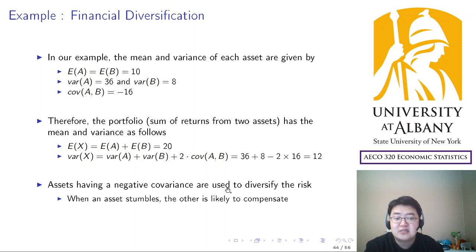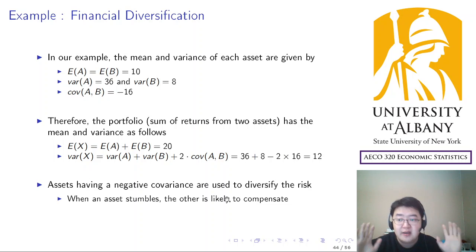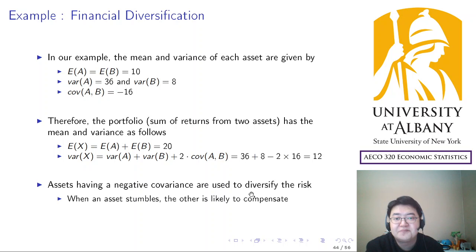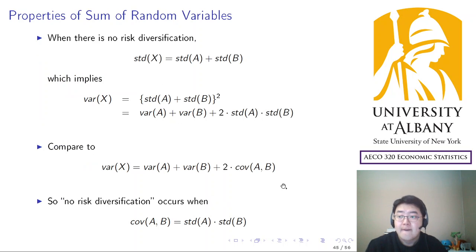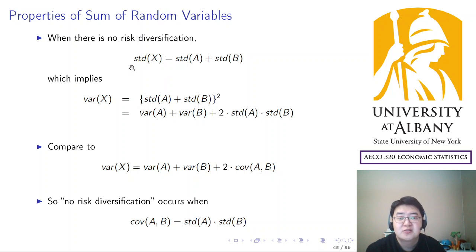Risk is diversified by the negative covariance, which means when one asset is not doing well, the other complements it — they move in opposite ways. Diversification does a really great job in reducing risk. So far we have only considered variance, but in many applications standard deviation is the more common measure, so we need one more algebraic step. Let's think about the standard deviation of X compared to the standard deviations of A and B.